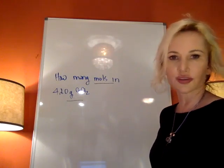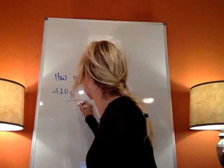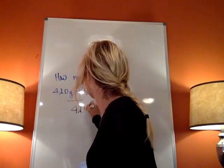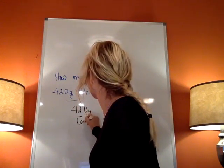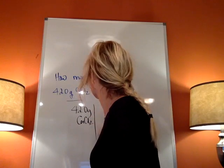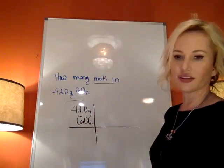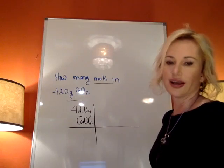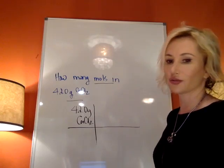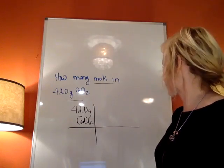You start with what you're given, the 42 grams. Then you go to a periodic table. You have to find out - this is the only place to get mass and to put it in one mole.